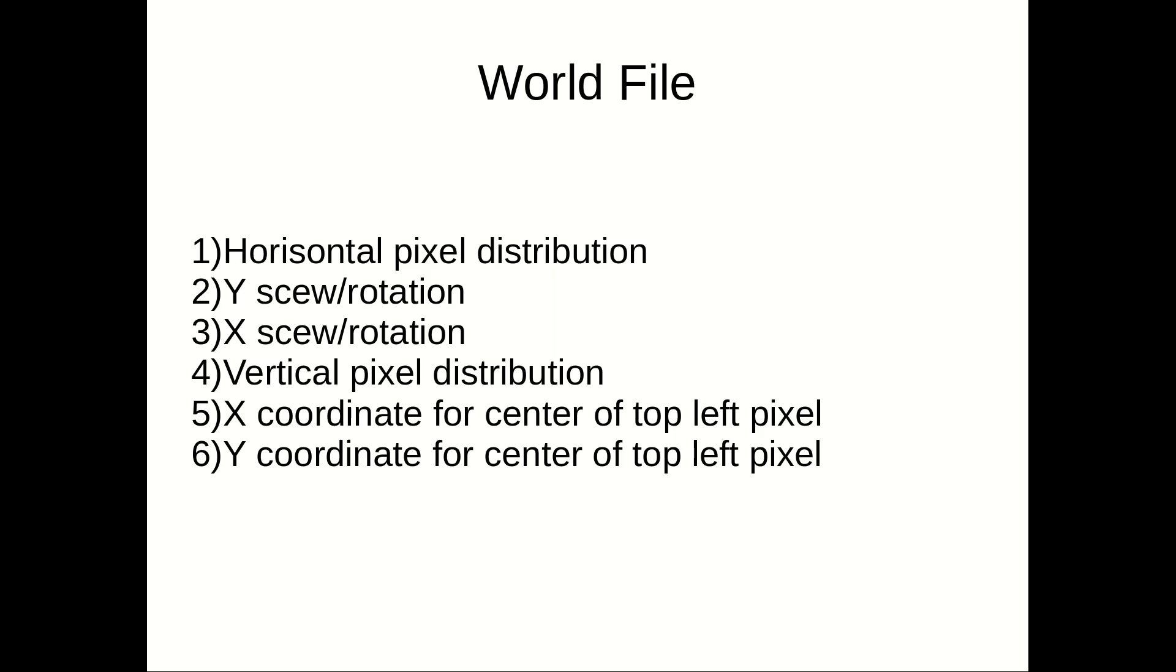The first row describes pixel distribution horizontally, or simplified, the width of each pixel in coordinate system values. The fourth row does the same for the vertical.